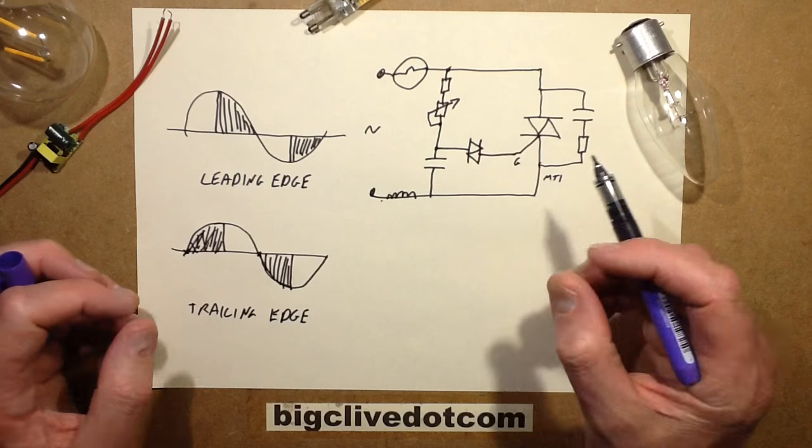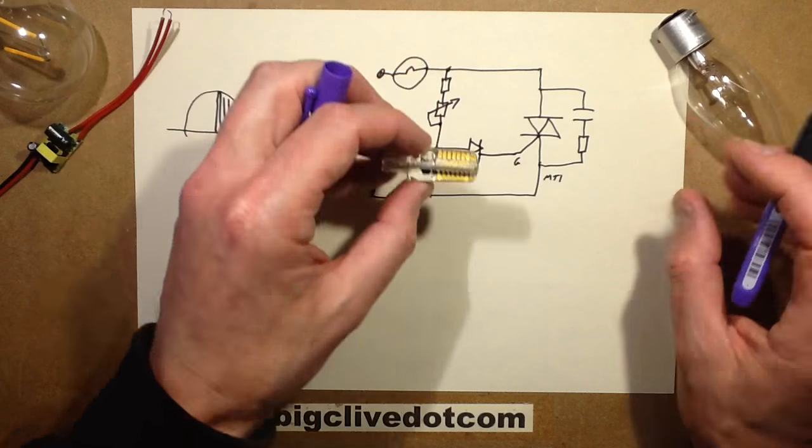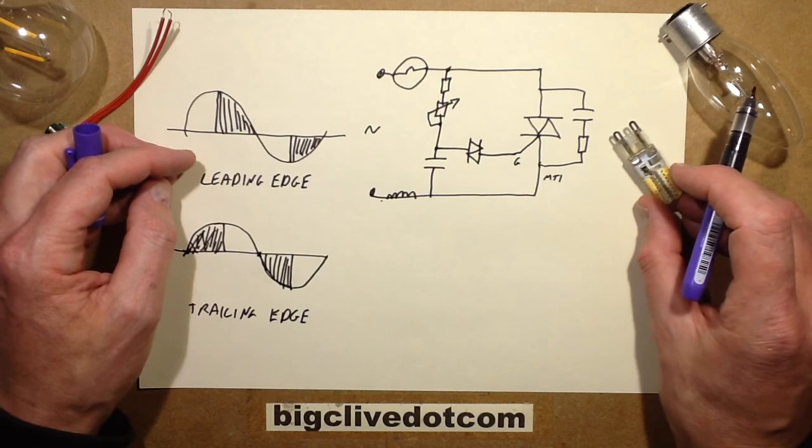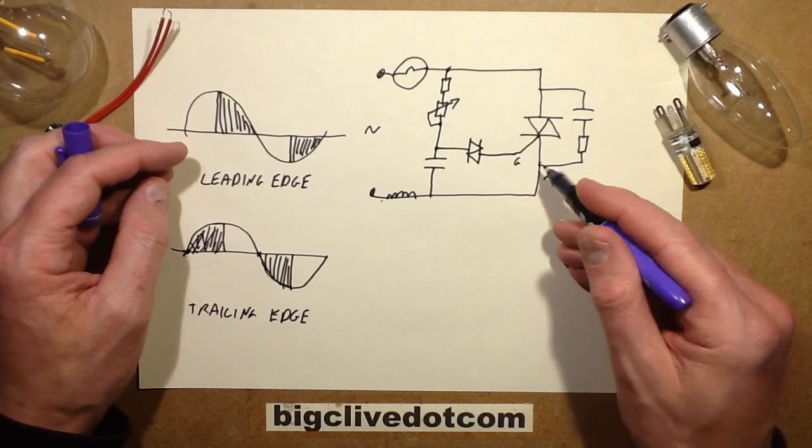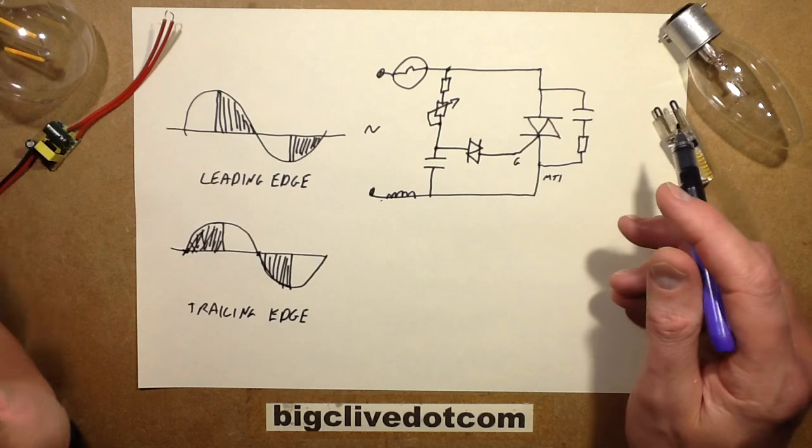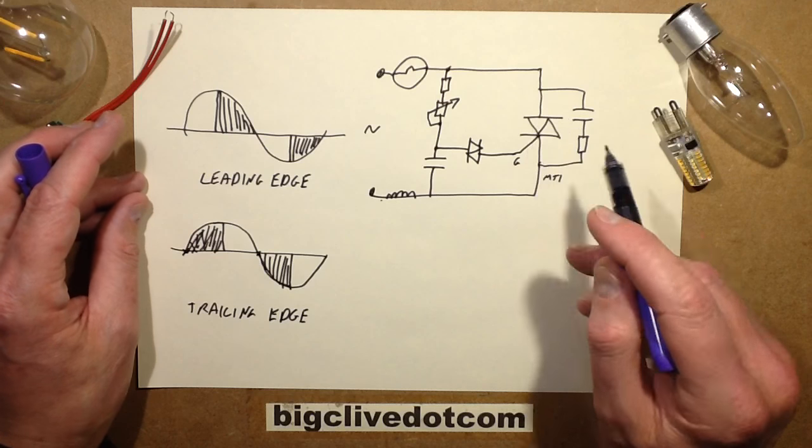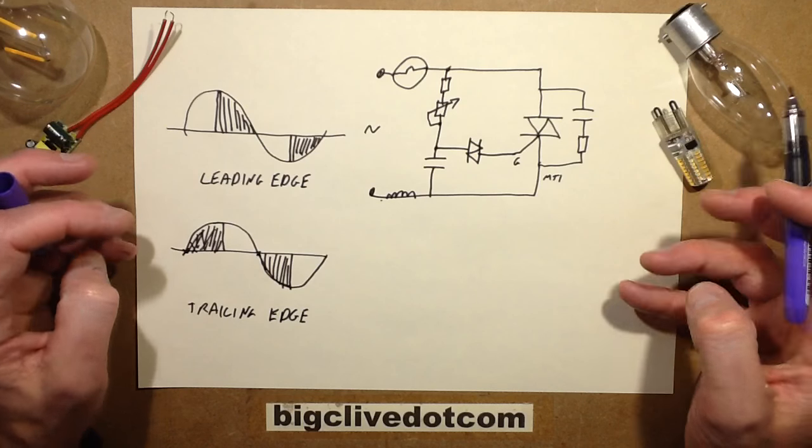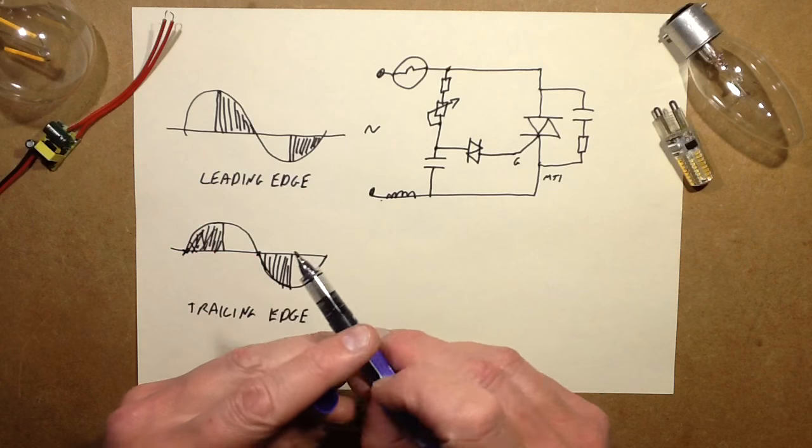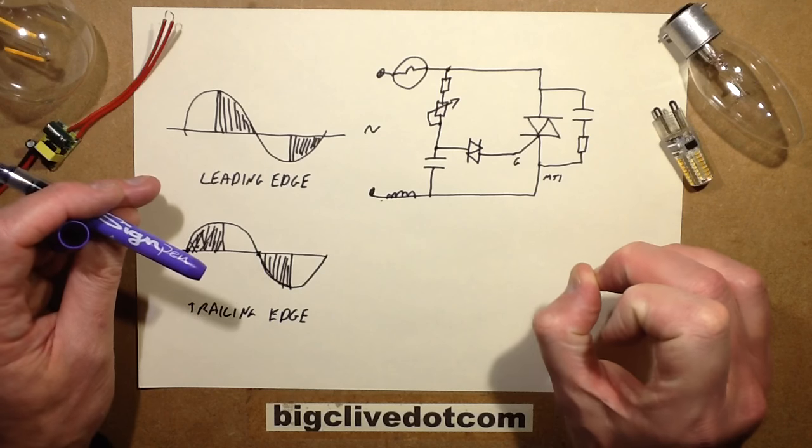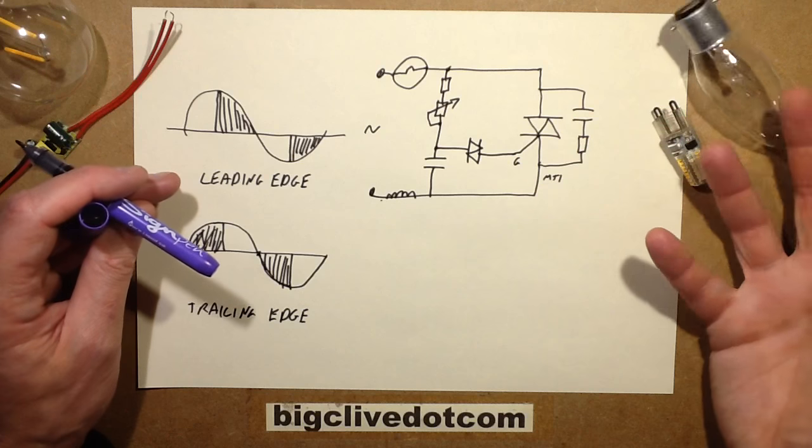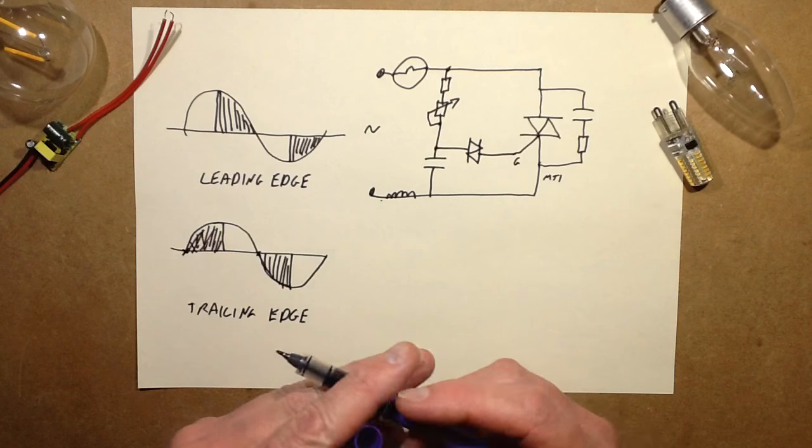However, when we use LED lamps with these dimmers, a problem occurs. Firstly, you have to have a minimum load to make these dimmers latch, and it's not so much a problem with the trailing edge dimmers, but with the old leading edge dimmers with the triacs it was a problem. Without that load, the triac won't latch and all you'll get is a very dull glow because the triac is getting its trigger pulse and then it's just instantly turning back off again because there's nothing to hold it on.